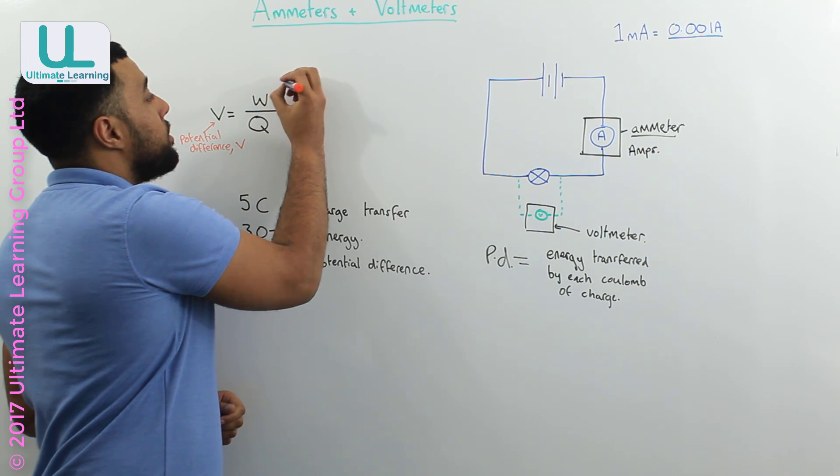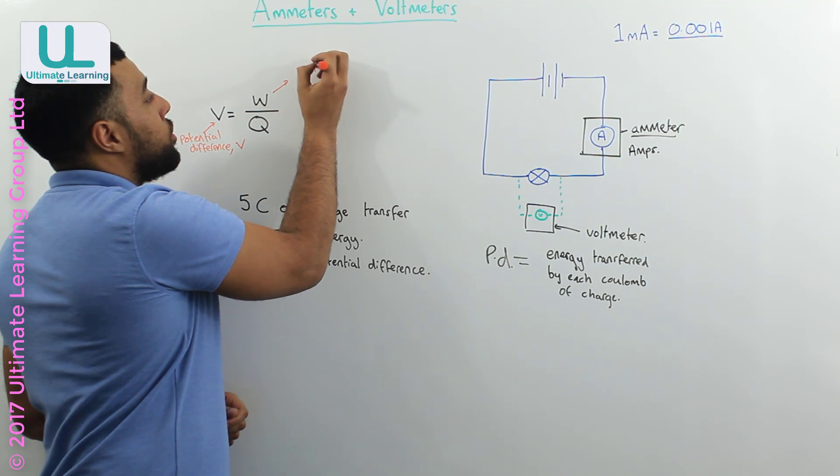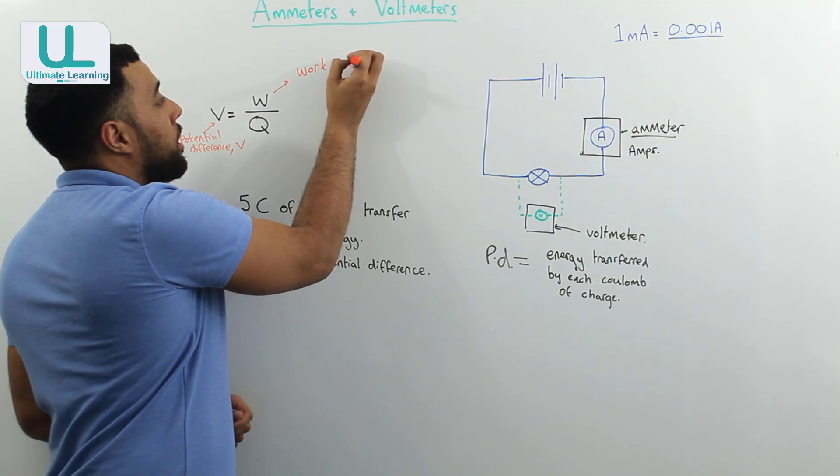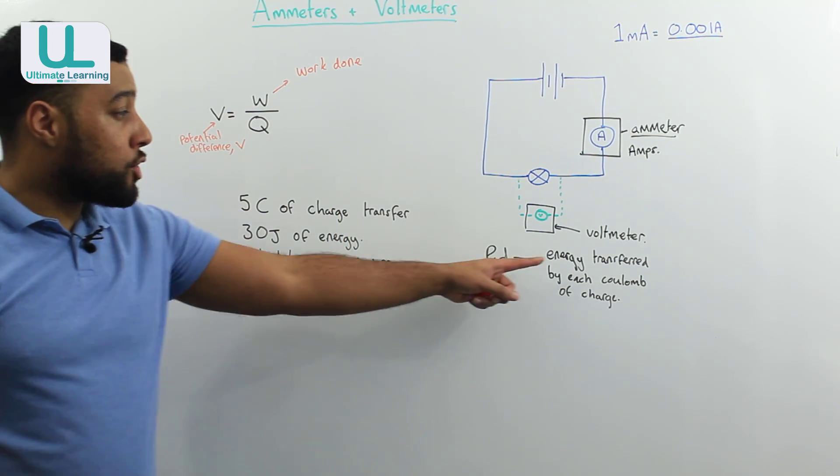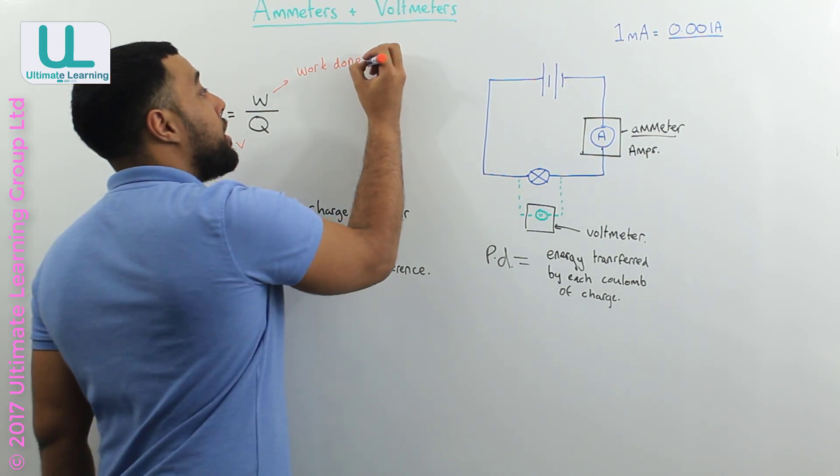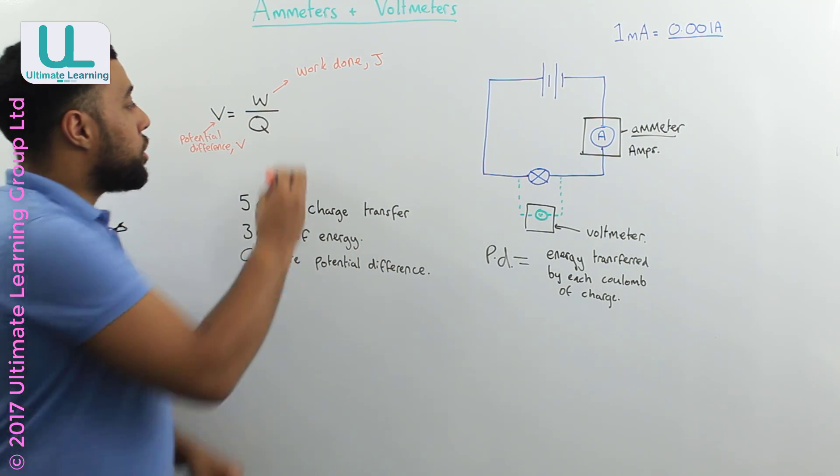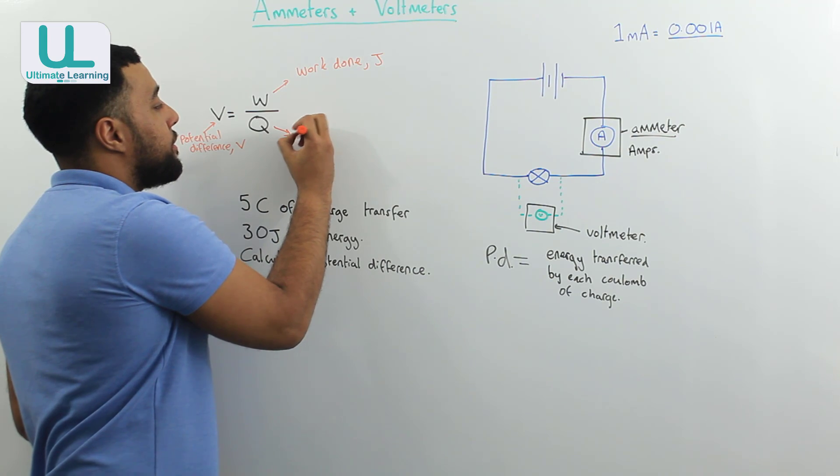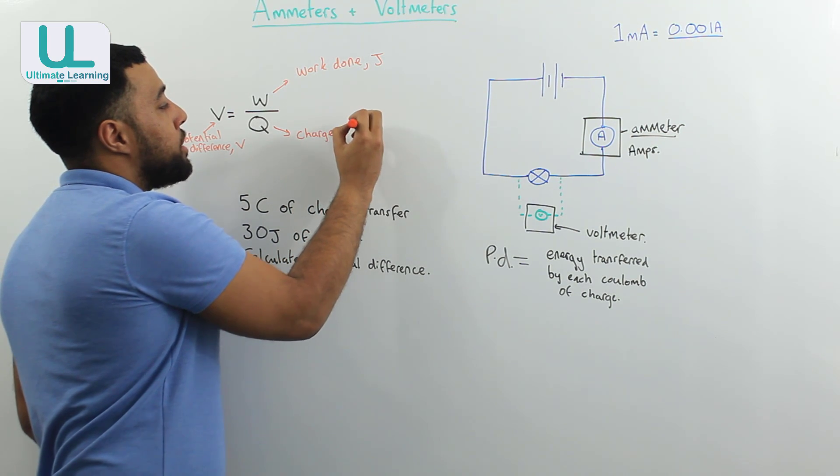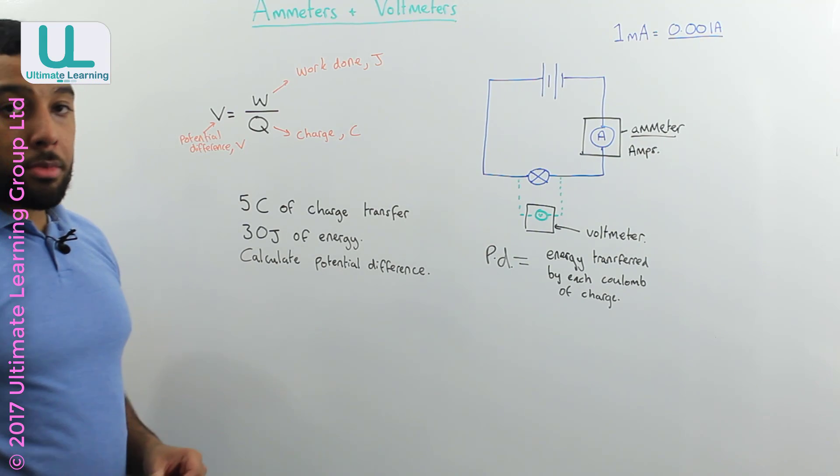The W stands for work done, or energy that's been transferred, and we measure that in joules. The Q stands for charge, and that's measured in coulombs.